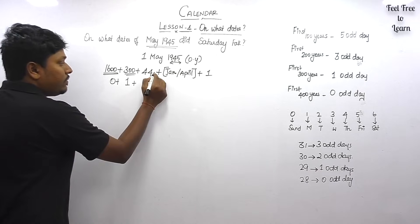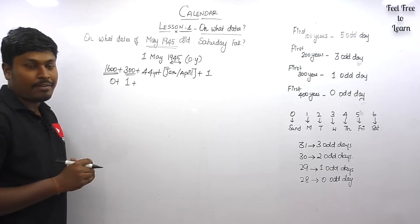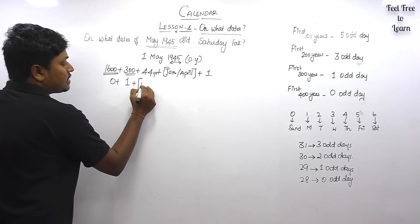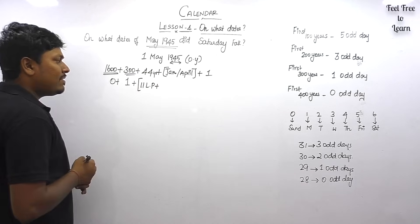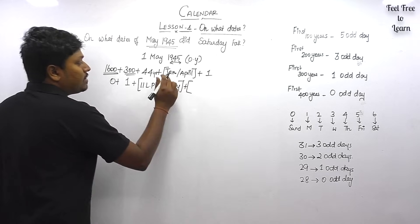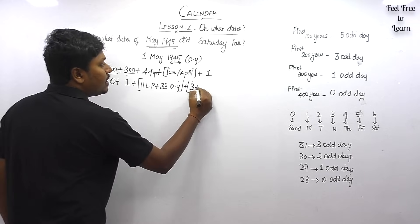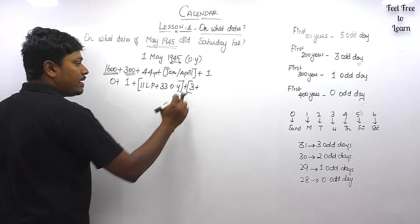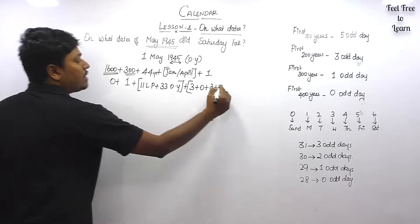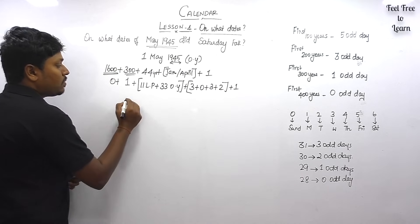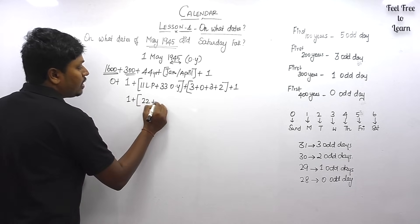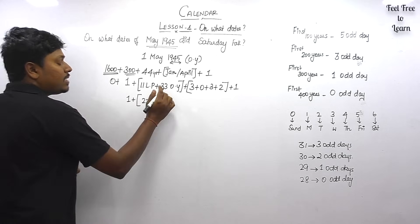For 1600 years: zero odd days. For the first 300 years: one odd day. For 44 years, check how many leap years — divide 44 by four, giving 11 leap years and 33 ordinary years. January has 31 days — three odd days. Because it's an ordinary year, February has zero odd days. March has three odd days, April has two odd days. Each leap year gives two odd days: 11 × 2 = 22. Each ordinary year gives one: 33 × 1 = 33.